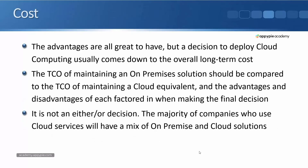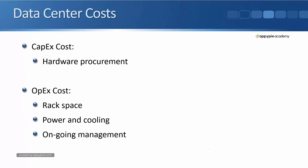Next, cost — and this is where we'll talk about doing our TCO calculation. Those advantages are all great, but a decision to deploy cloud computing usually comes down to the overall long-term cost. The total cost of ownership of maintaining an on-premise solution should be compared to the TCO of a cloud equivalent, with the advantages and disadvantages of each factored in. It's not an either-or decision — the majority of companies who use cloud services will have a mix of on-premise and cloud solutions.